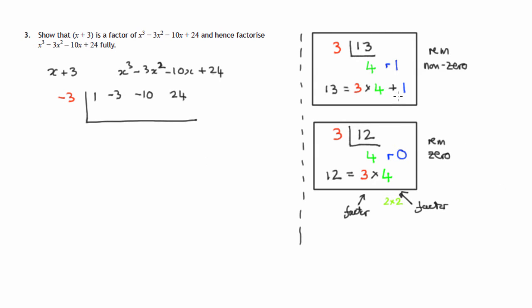Now the process that we go through to get the quotient and the remainder is as follows. We bring this 1 down. Then we go 1 times this negative 3 gives us negative 3. We then add these two numbers, get negative 6. We then multiply the negative 6 and this negative 3 to get 18. We then add these two numbers, 18 and negative 10, to get 8.